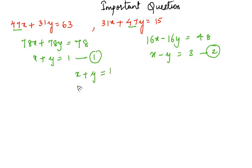x plus y equals 1, x minus y equals 3. On adding these two, plus y minus y cancel. x plus x is 2x equals 4, so x equals 4 by 2, which is 2.